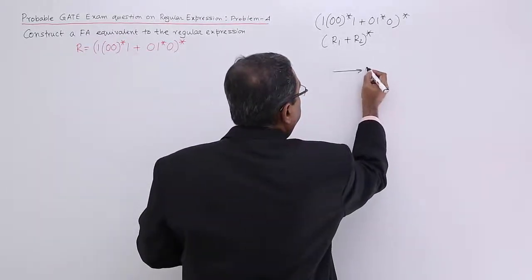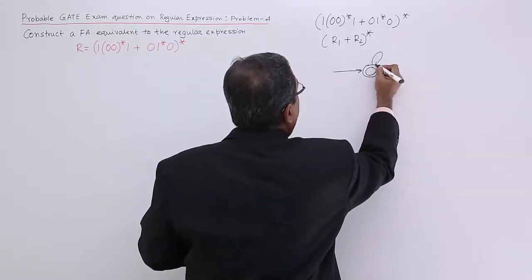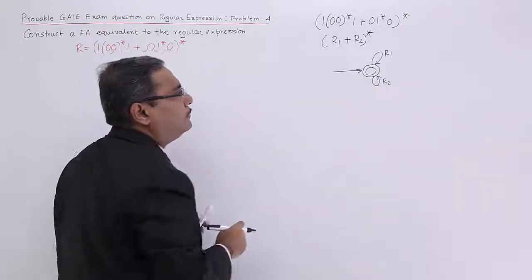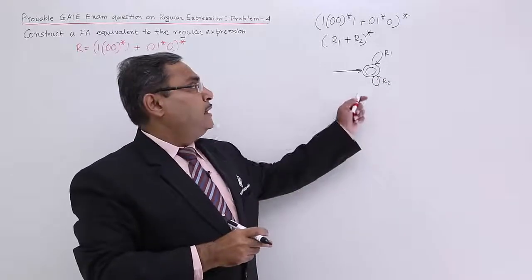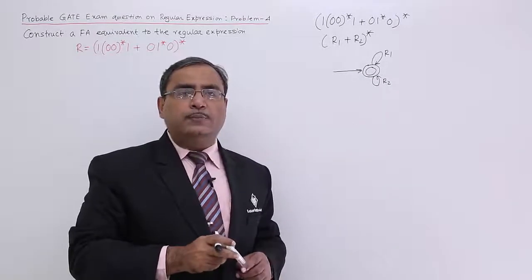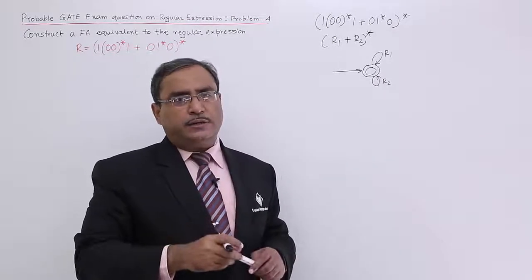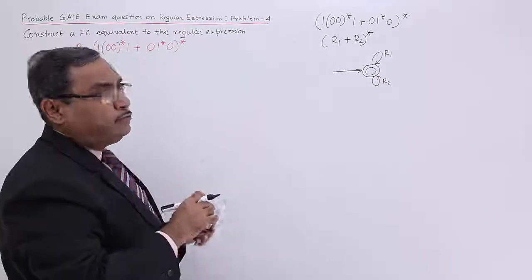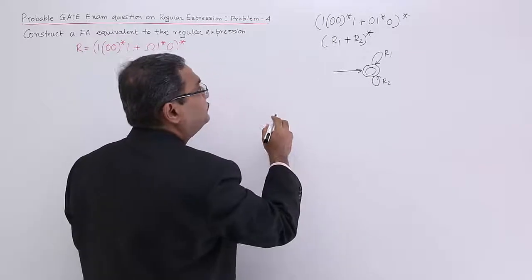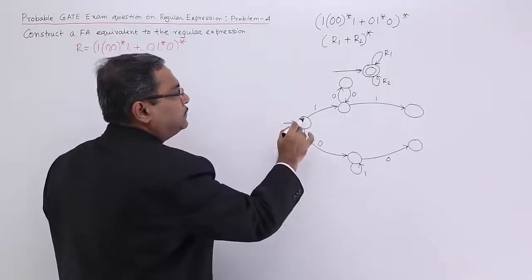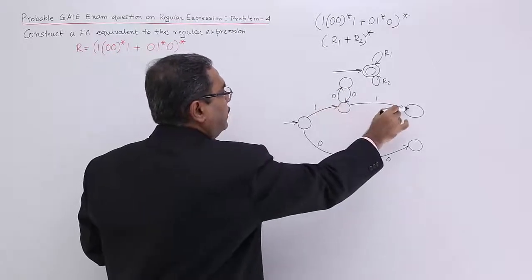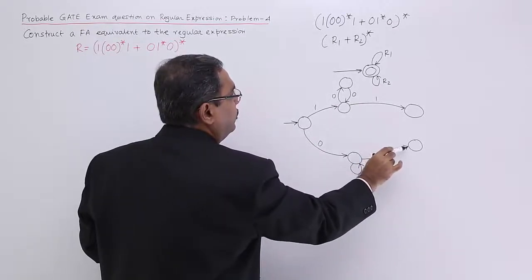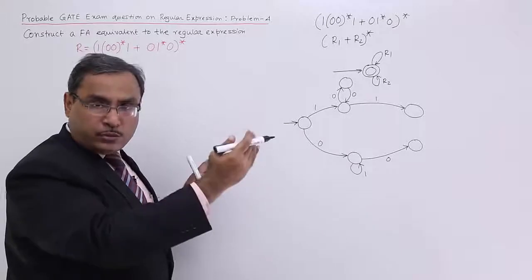If we draw the respective transition diagram, it should look like this. That means r1 and r2 both will be having their self loops on the initial state as well as the final state. This is my (100)* 1 and this is my (01)* 0.